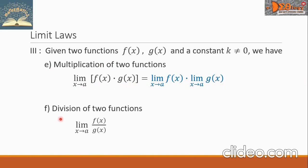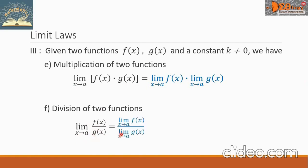Letter F — division of two functions. The form is the limit as x approaches A of f of x divided by g of x. We take the limit of the numerator and denominator respectively. So we have the limit of f of x as x approaches A, divided by the limit of g of x as x approaches A, provided that the limit of g of x as x approaches A is not equal to zero — since division by zero is not allowed.